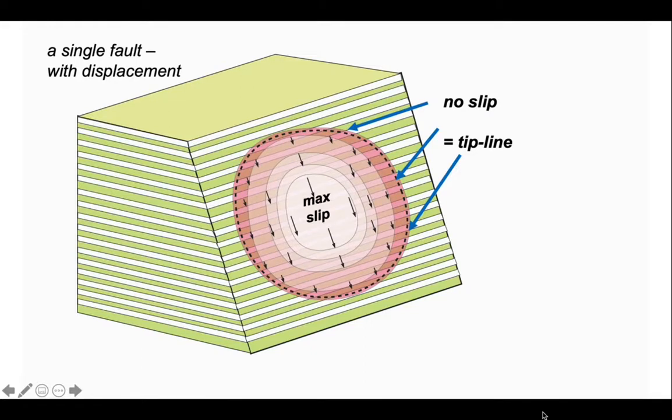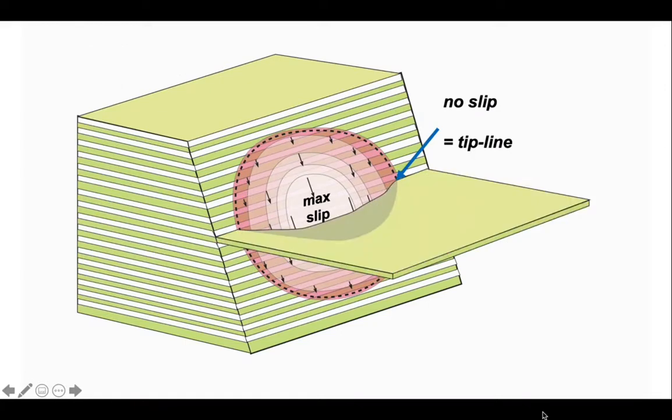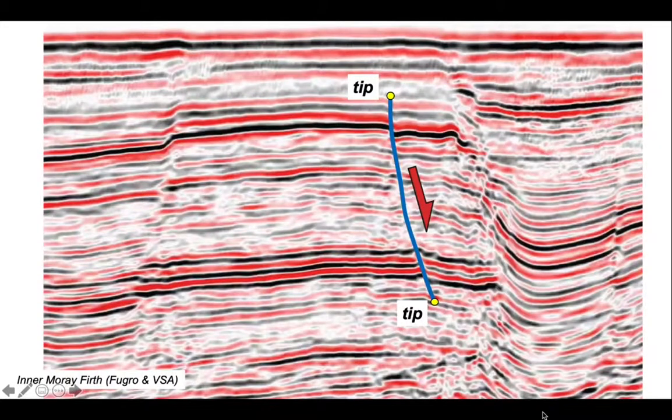The very edge of the fault is called a tip - it's a tip line, a line in three-dimensional space that lassoes the slip surface. Beyond the tip line there's no slip. So we can see here when we put our horizon back into the hanging wall, where the maximum slip is in the middle, decaying away to no slip at the tip line on both sides of the diagram.